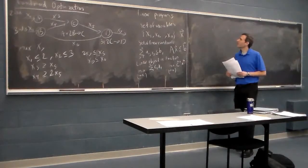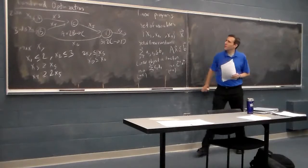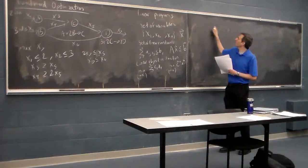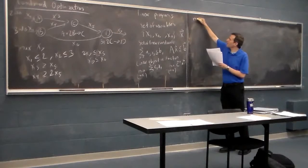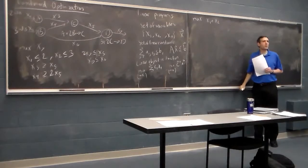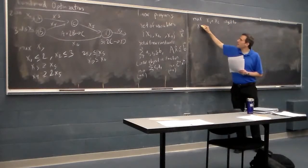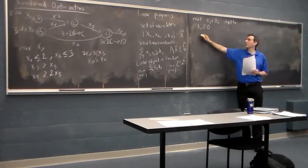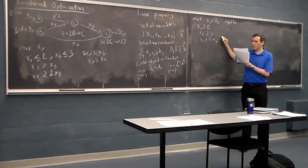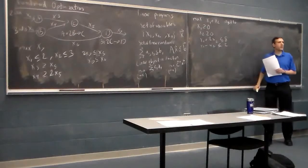To understand how we solve linear programs, it helps to move to an easier example. Let's say we're trying to maximize x1 plus x2, subject to: x1 greater than or equal to 0, x2 greater than or equal to 0, x1 plus 2x2 less than or equal to 8, and x1 minus x2 less than or equal to 2. I use two variables because we can interpret solving this geometrically.